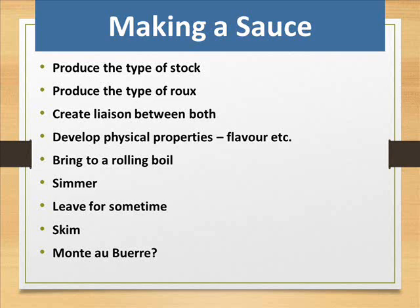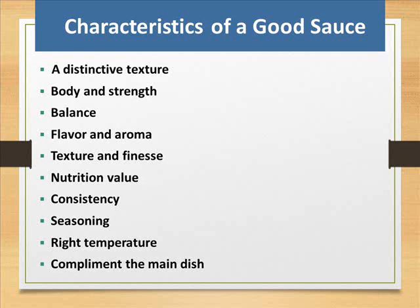Making a sauce: produce the type of stock, produce the type of roux, create a liaison between both, develop physical properties and flavor, bring to a rolling boil, simmer, leave for some time, skim, and finish with monter au beurre. Characteristics of a good sauce: a distinctive texture, body and strength, balance, flavor and aroma, texture and finesse, nutrition value, consistency, seasoning, right temperature, and complement to the main dish.